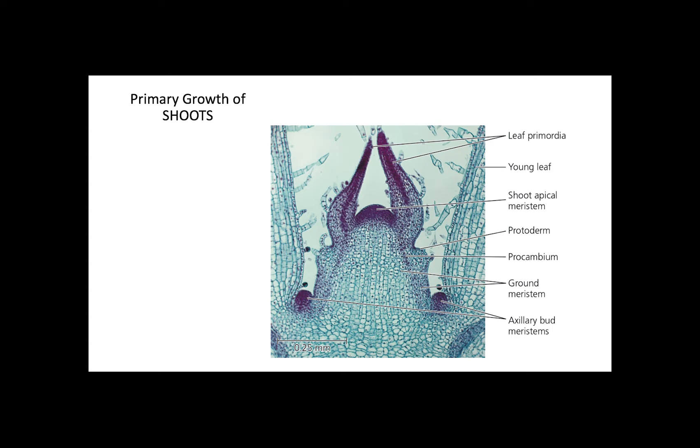In terms of shoots, primary growth takes place from two major areas: the shoot apical meristem and the auxiliary bud meristem.